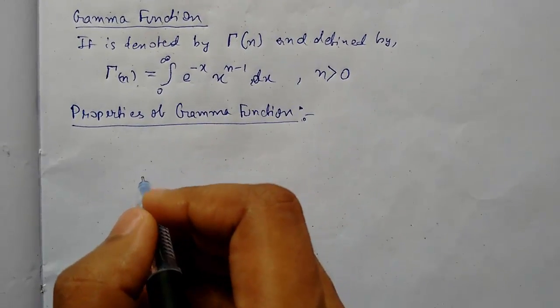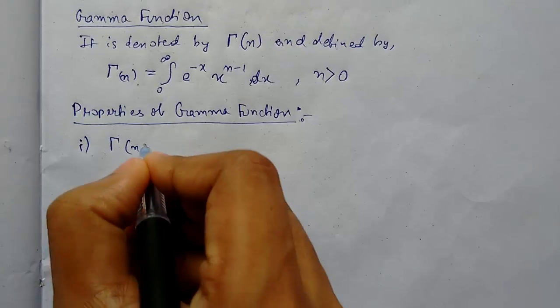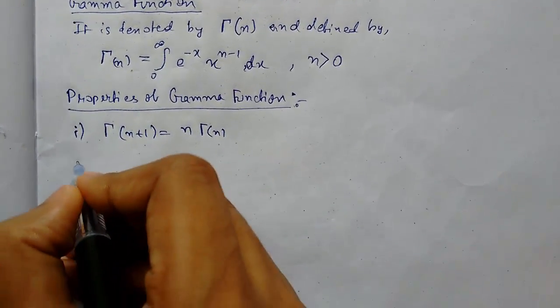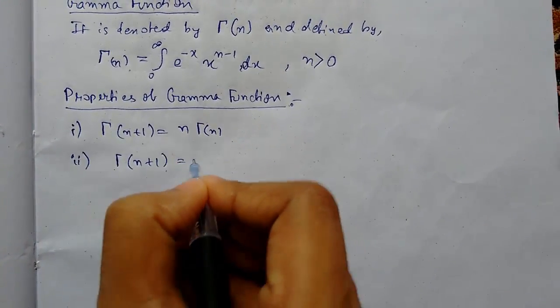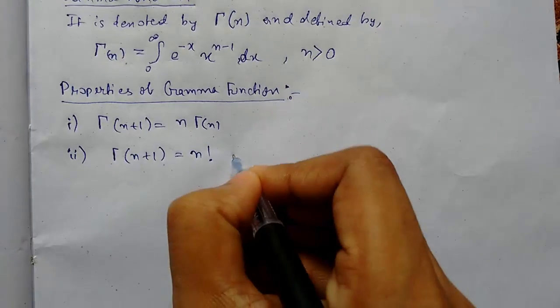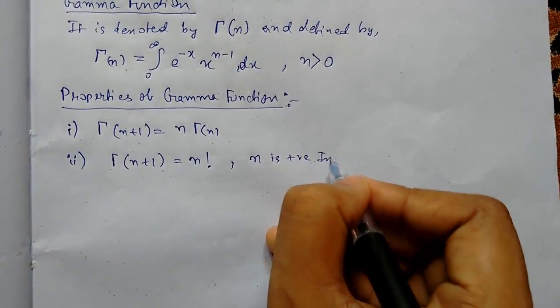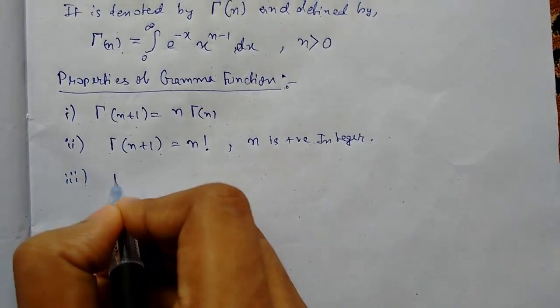Now we will see some properties related to gamma function. Number 1: gamma(n+1) equals n times gamma(n). Number 2: gamma(n+1) equals n factorial, only when n is a positive integer. And number 3: gamma of one-half equals root pi.